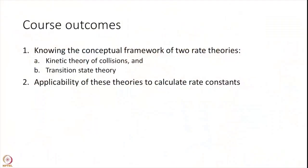In terms of course outcomes, we have two important outcomes. In this course we will be looking at two specific theories: the first one is the collision theory and the second one is the transition state theory. Both these theories calculate rate constants of reactions. So this course will cover how to calculate these rate constants under these two theories.